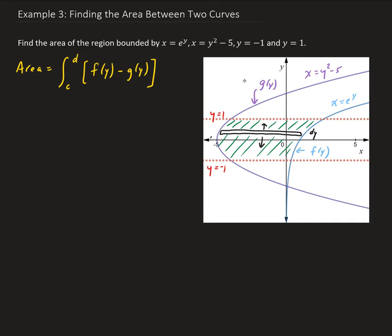So we're going to have the integral from minus 1 to 1 of e to the y minus y squared minus 5 dy. So this is equal to the integral from minus 1 to 1 of e to the y minus y squared plus 5.